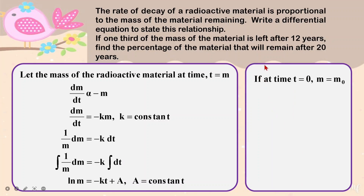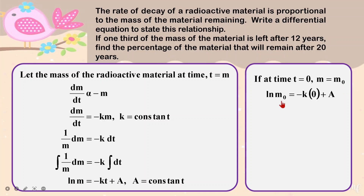With that, I need to settle with the information. According to the question, at t equals zero, the material should be at the original mass m0. So we put in the details and calculate the constant A, getting rid of it, and then we put the equation back into our calculation. So we have ln m equals negative kt plus ln m0.